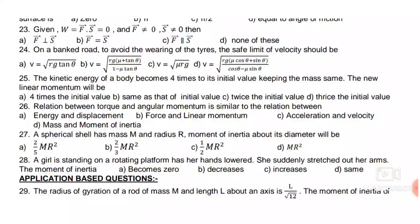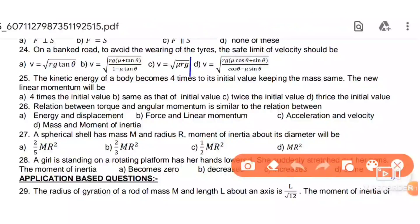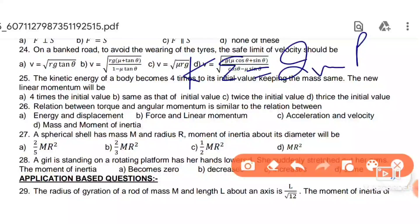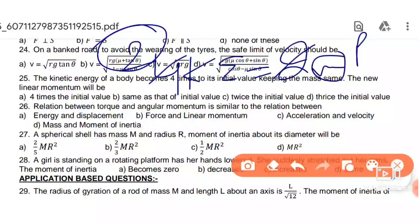Next: the kinetic energy of a body becomes 4 times its initial value. Using the formula KE = p²/2m, if KE becomes 4 times and mass stays the same, then linear momentum becomes 2 times its initial value.